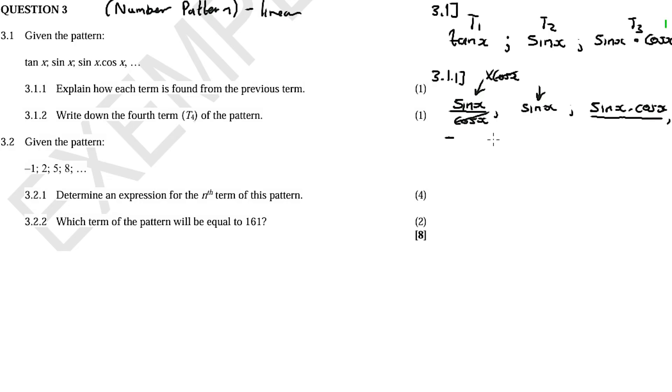The explanation for 3.1.1 is that we multiply the previous term by cos x. For 3.1.2, write down the fourth term of the pattern. The fourth term is T3 multiplied by cos x, so we get sin x times cos x times cos squared x. This is term number 4.